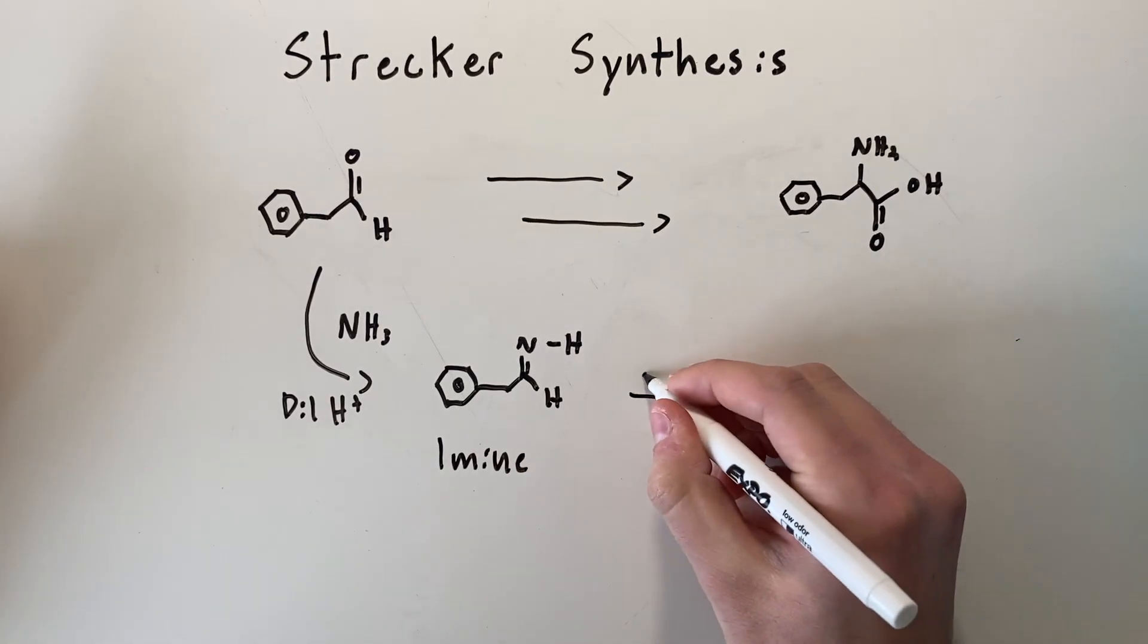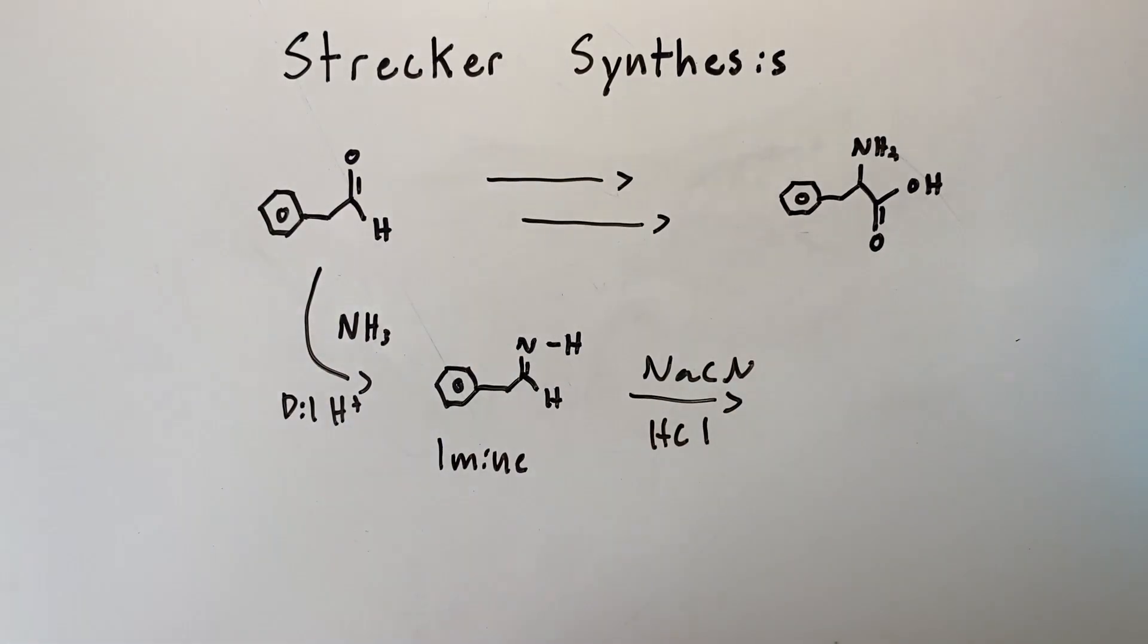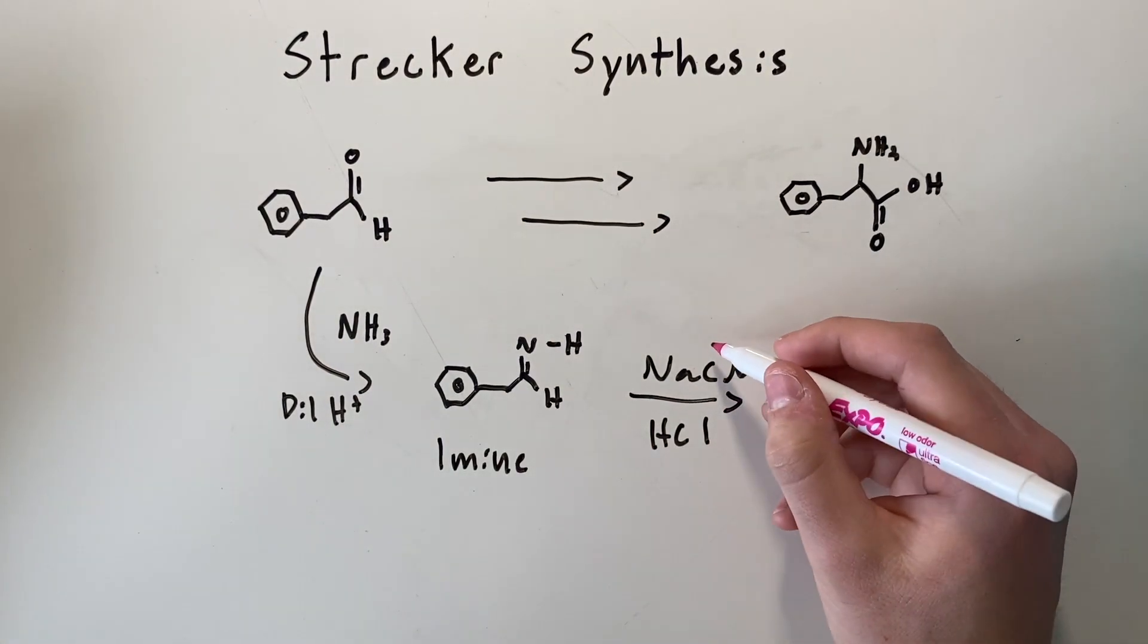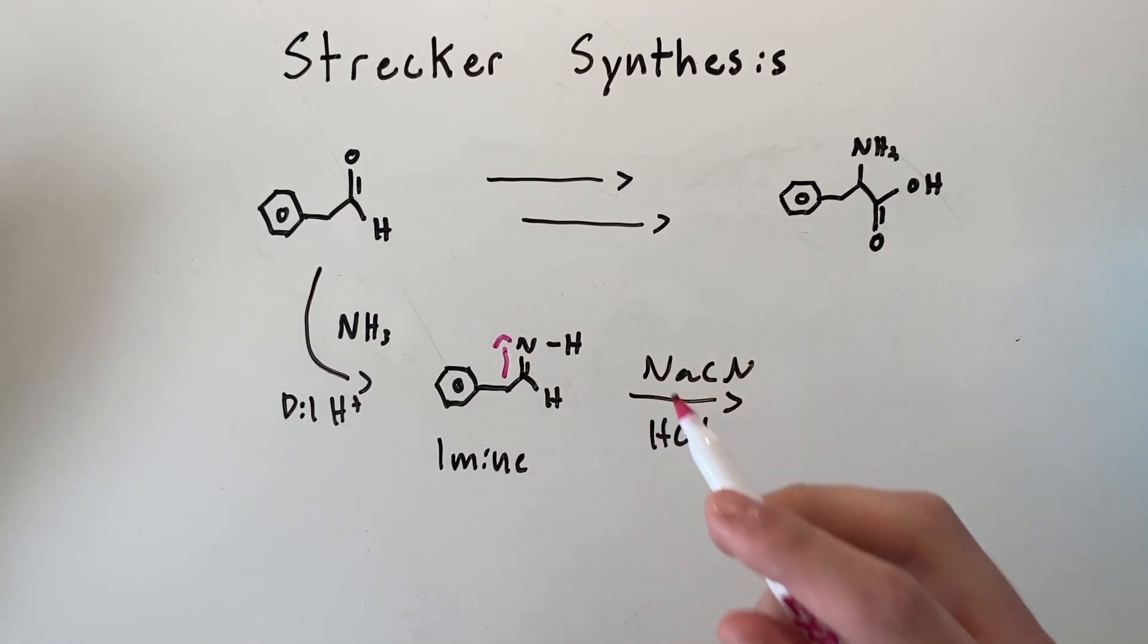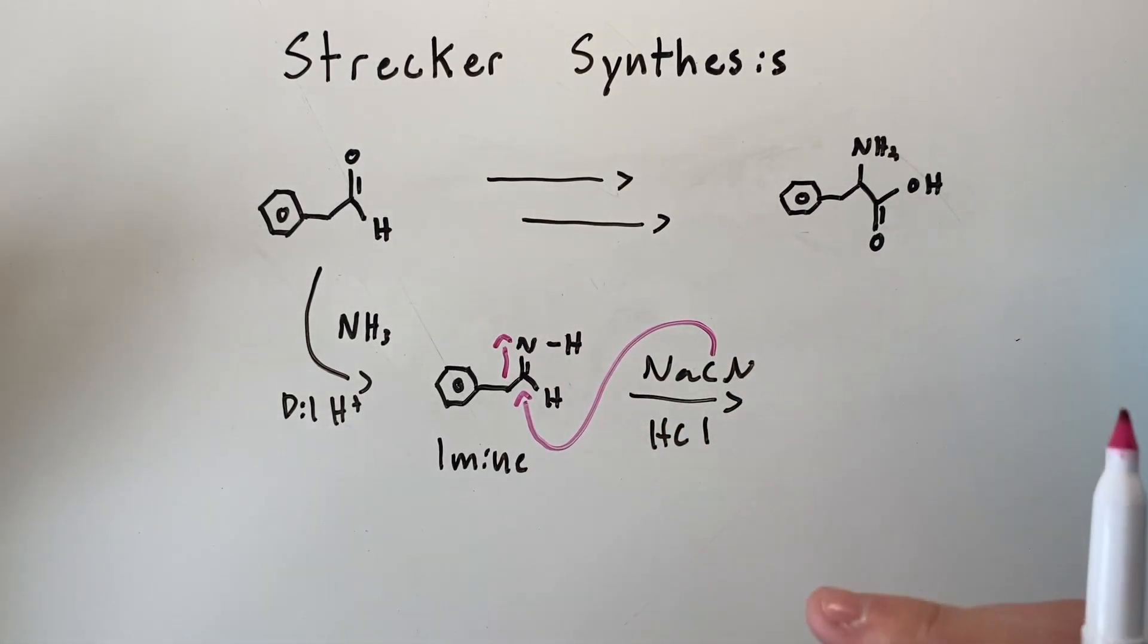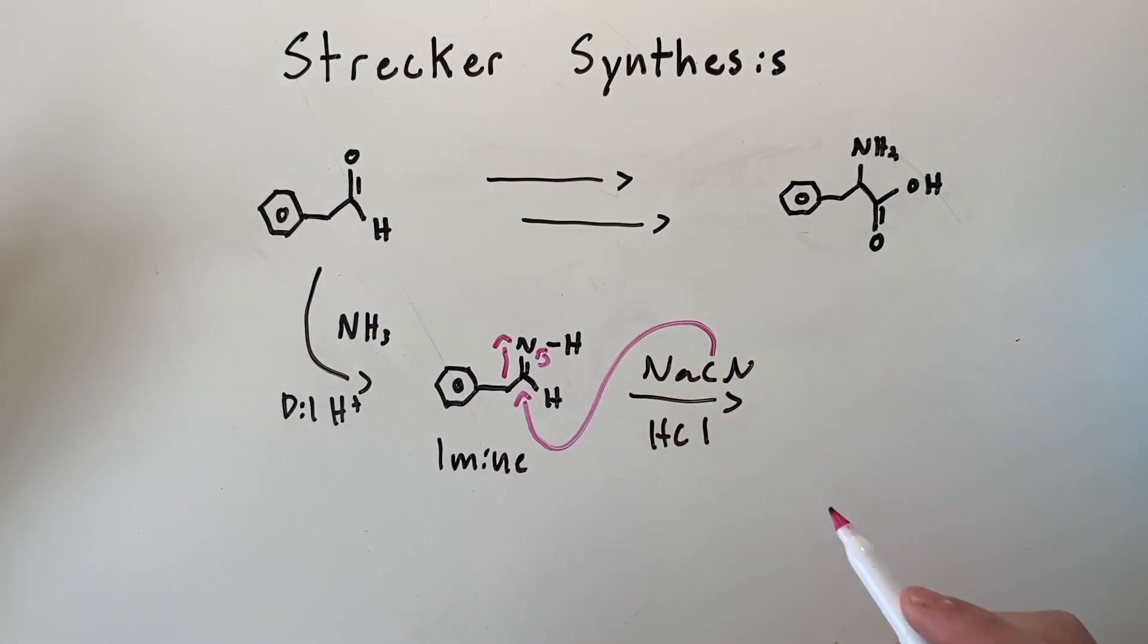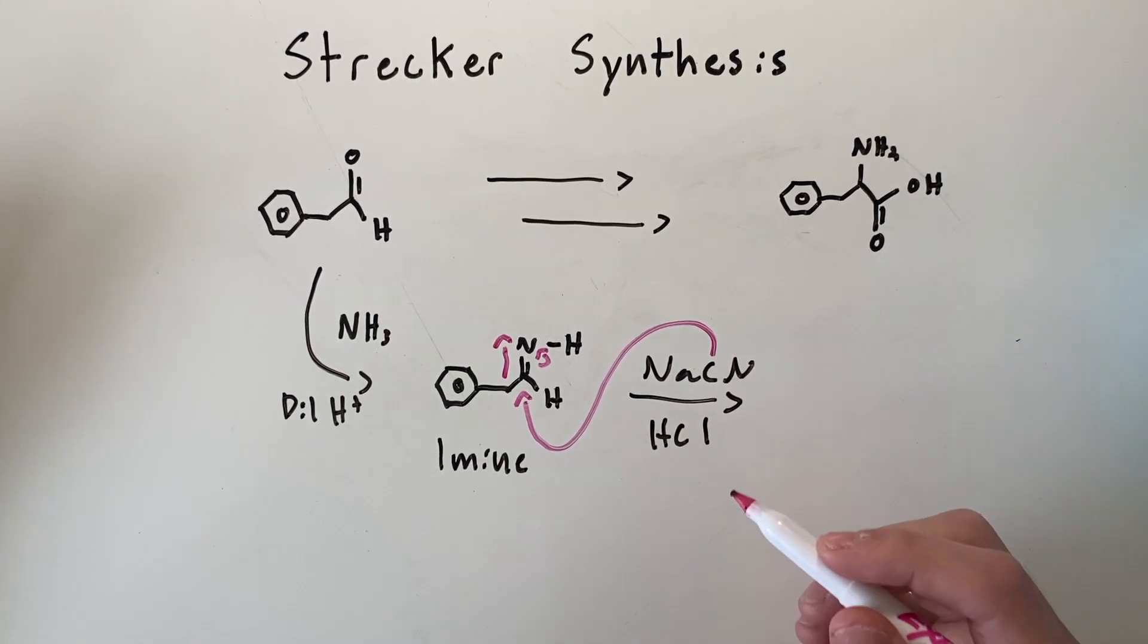Next, we're going to add our sodium cyanide along with HCl. Since this is in solution, our carbon has a negative charge. There's a dipole with this carbon up towards the nitrogen since nitrogen is more electronegative than carbon. This negative is going to act as a nucleophile and perform a nucleophilic attack on this carbon here. And these pi electrons will swing up to nitrogen and then nitrogen will pick up a hydrogen from HCl in solution.